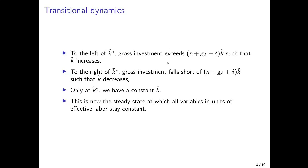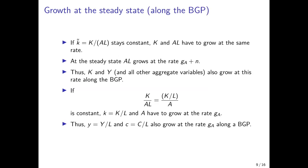To summarize: to the left of the steady state capital per unit of effective labor, gross investment exceeds capital dilution and depreciation and the capital stock accumulates. To the right, gross investment falls short, so capital per unit of effective labor decreases. Only at the steady state is it constant. At this steady state, all variables in units of effective labor are constant — but this does not mean the economy stagnates, because technological progress in the background causes per capita variables to grow at the rate of technological progress.